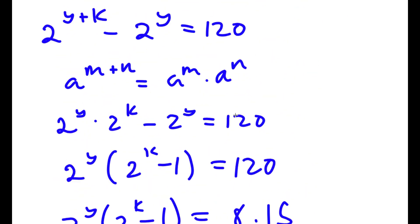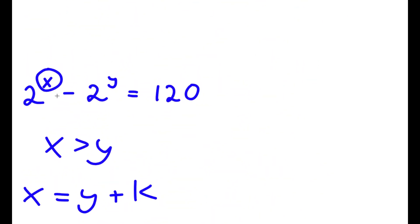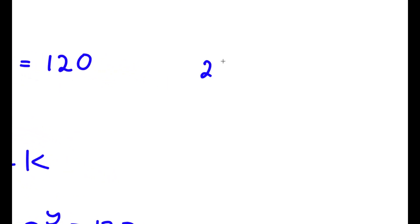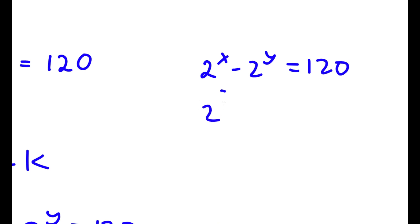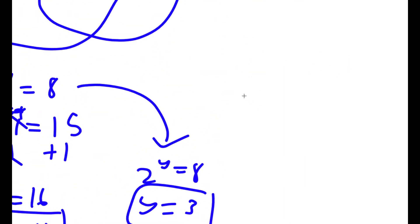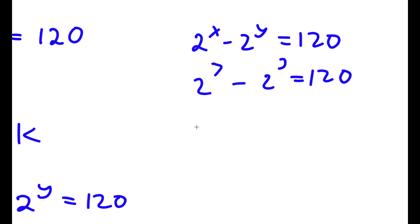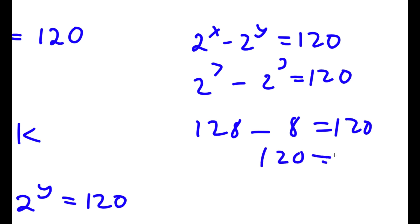Now to check: my original equation was 2 to the power of x minus 2 to the power of y equals 120. We know x is 7 and y is 3. 2 to the power of 7 is 128, minus 2 to the power of 3 which is 8, gives me 120 equals 120.